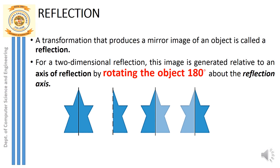First, the reflection technique. In common words, reflection is when you stand in front of a mirror and see yourself — your reflection is observed in the mirror. The same way, a transformation that produces a mirror image of an object is called reflection. If an object is placed in front of a mirror, the reflection of the object is produced on the mirror. We call this reflection a type of 2D transformation.